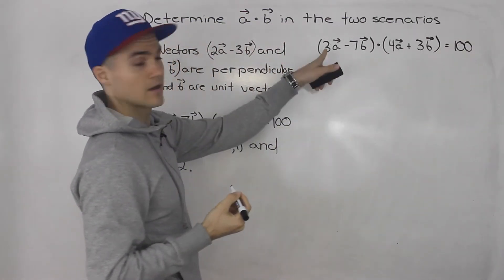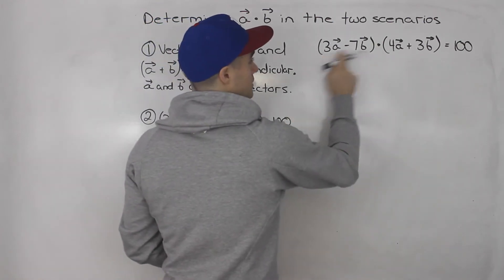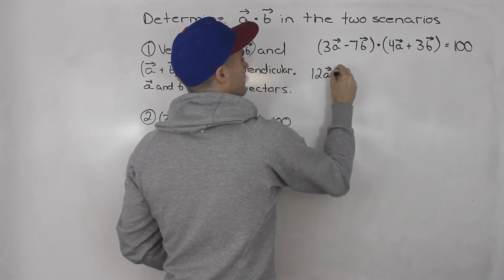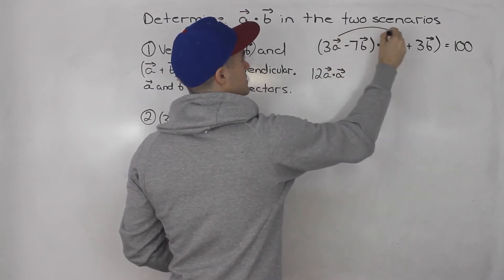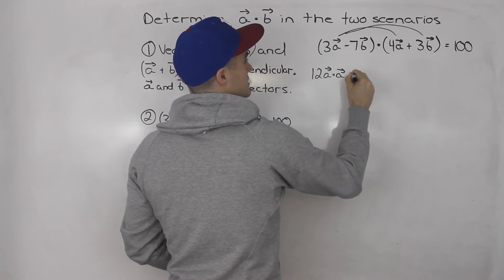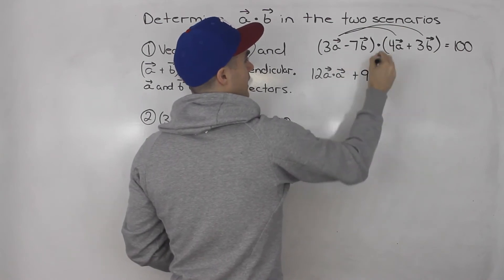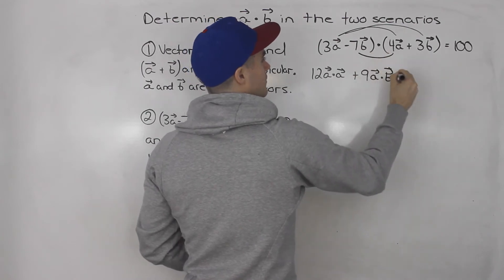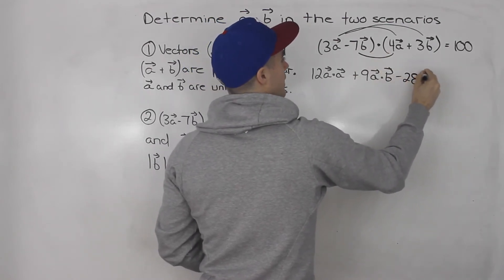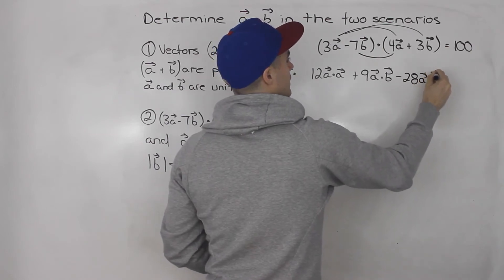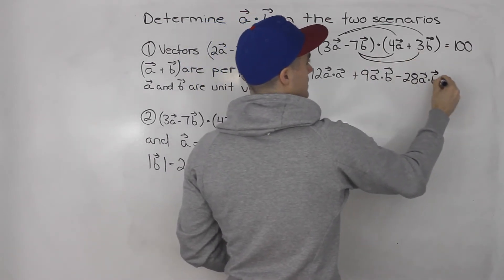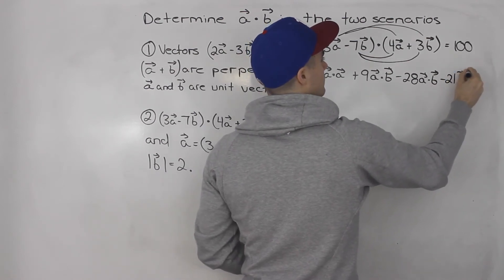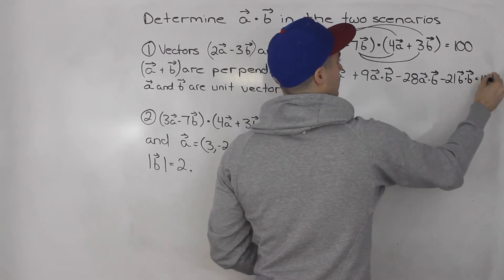We can expand the left side: 3 times 4 is 12, giving us a dot a. Then 3 times 3 is 9, giving a dot b. Over here, minus 7 times 4 is minus 28, giving a dot b again. And then minus 7 times 3 is minus 21, giving b dot b. And that has to equal 100.